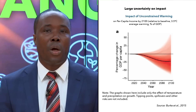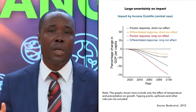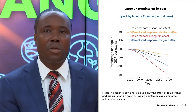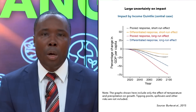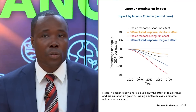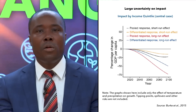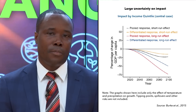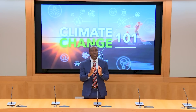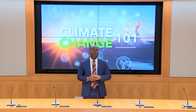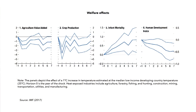Such large output losses will significantly increase global income inequality, as indicated by this graph. Note that the effects of tipping points, spillovers, or other risks are not included in these estimates. It is important to emphasize that the effects of climate change cannot be captured in a single GDP number. For example, threats to food security, infant mortality, and human development in general are not adequately captured in GDP, as shown in the graph here.